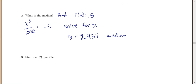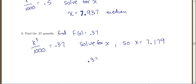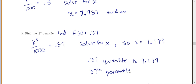How would you find the 0.37 quantile? It's the exact same thing — you want 37% of the data below it, so you look for where the CDF equals 0.37. Set x³/1000 equal to 0.37 and solve for x. We get x equals 7.179. So the 0.37 quantile — or equivalently the 37th percentile — is 7.179, meaning 37% of the data is less than 7.179.